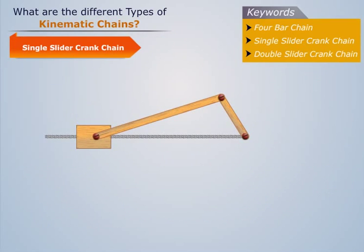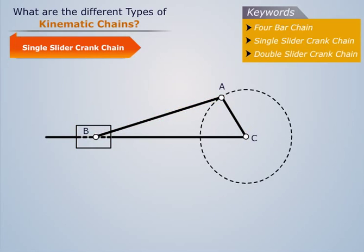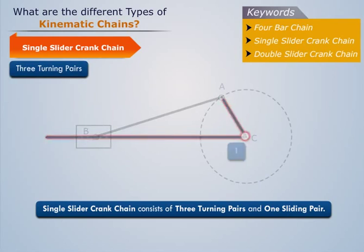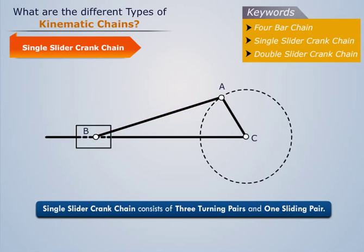A single slider crank chain is the modification of a four bar chain. It consists of three turning pairs and one sliding pair.